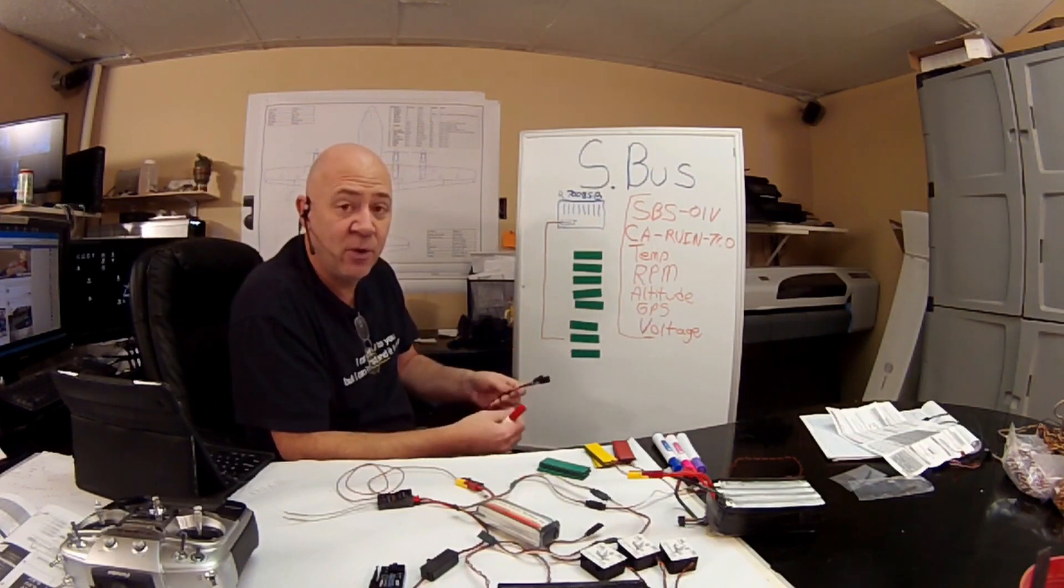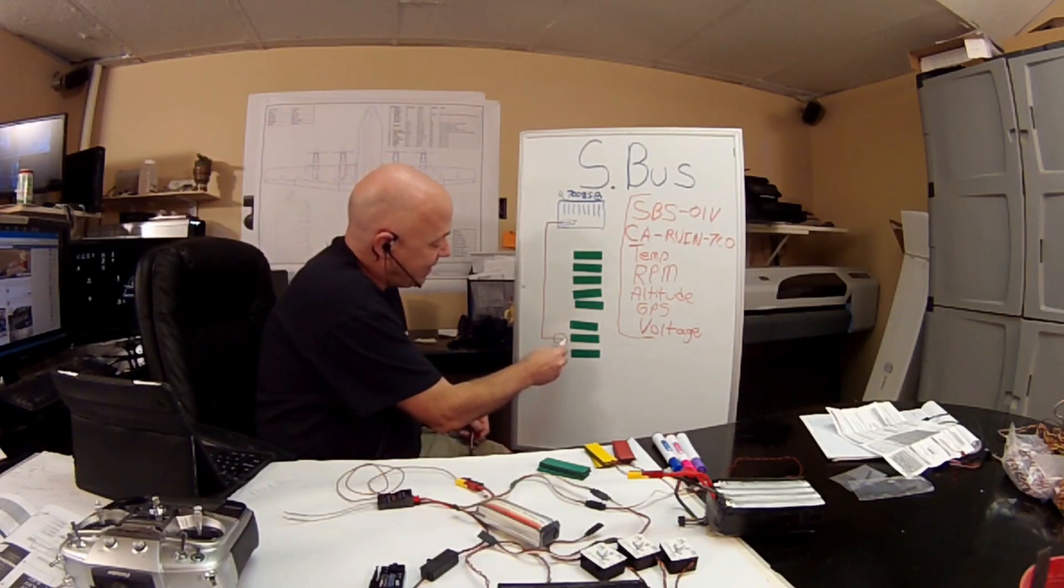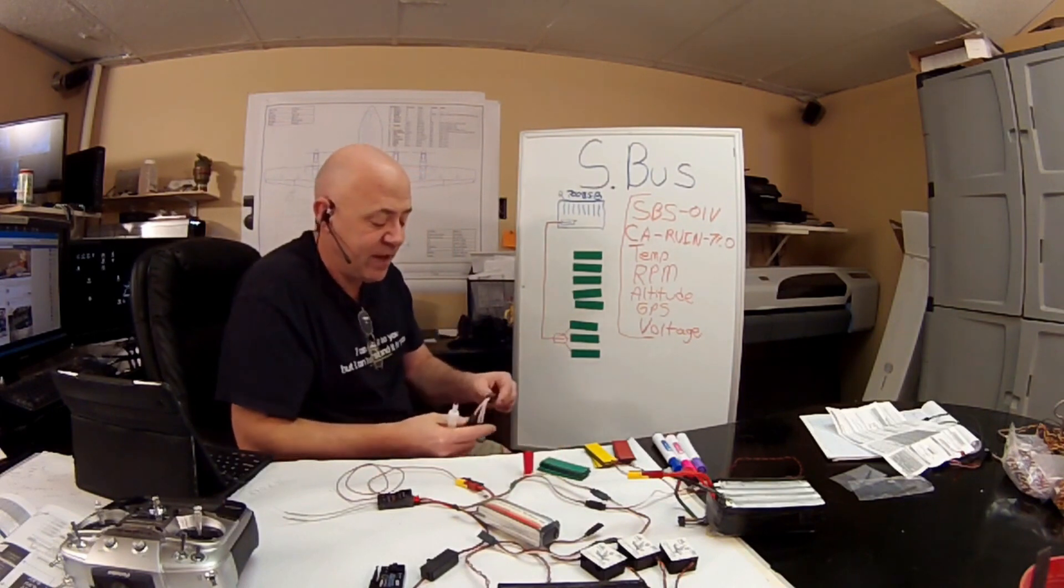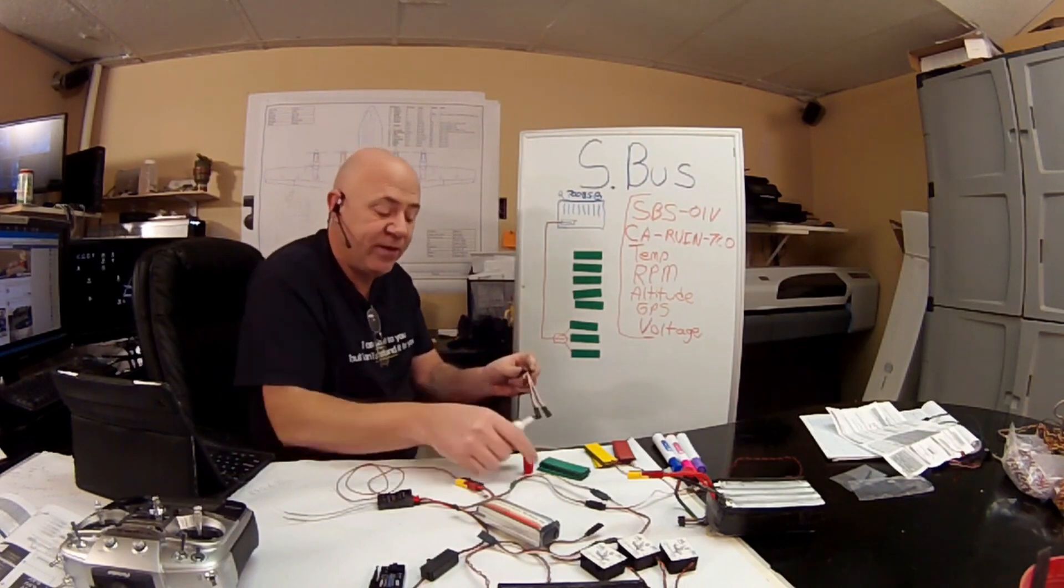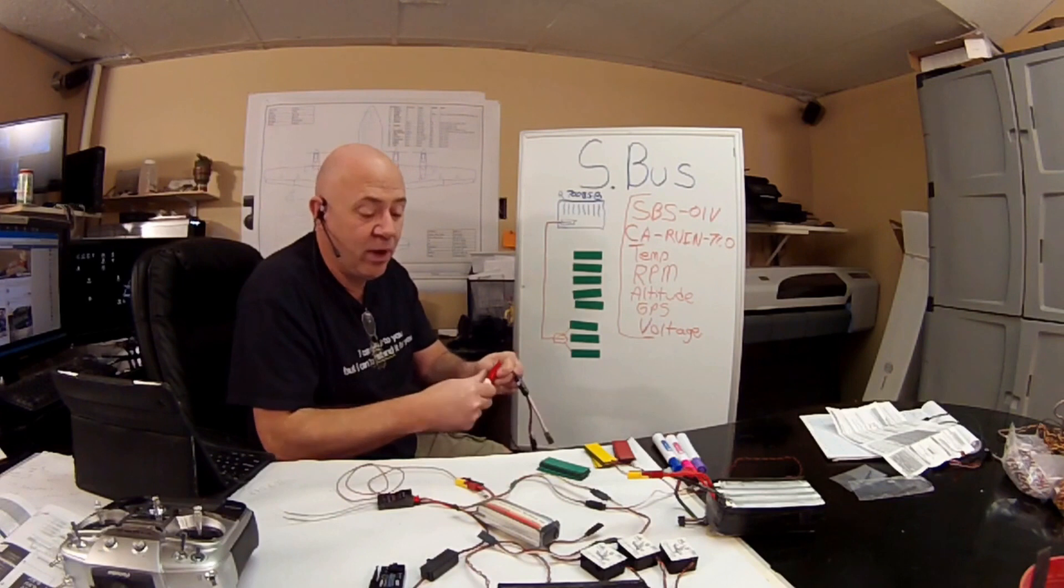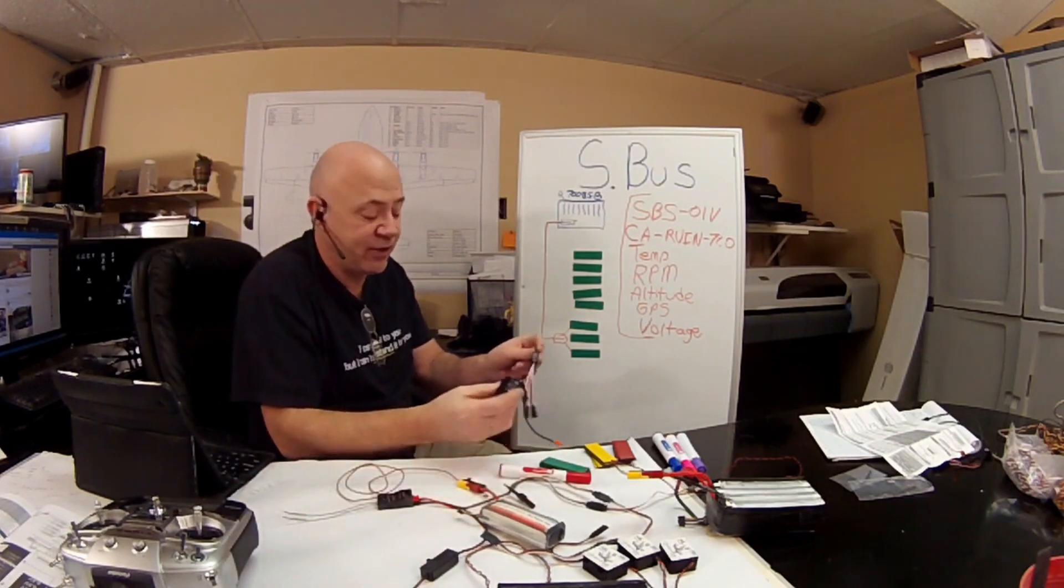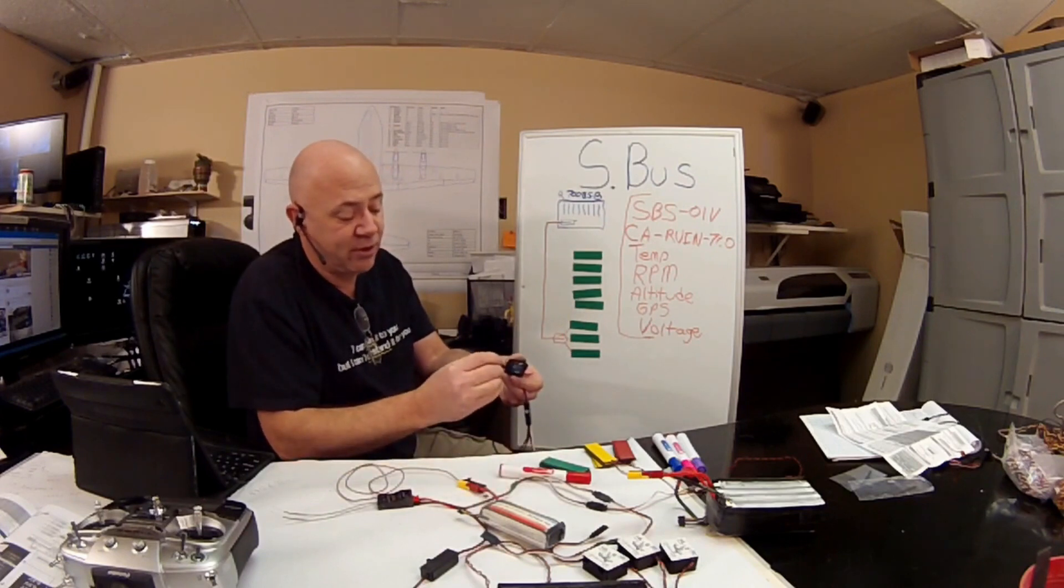So what you'll end up having is right here, you'll have an SBD1 and you'll run that to your servos. Now another thing that I got an email about is you can make these any channel you want. And the way you make this SBD1 any channel you want is you got a little channel changer here. You plug this in, you're going to use this little micro screwdriver to turn it to the channel you want.